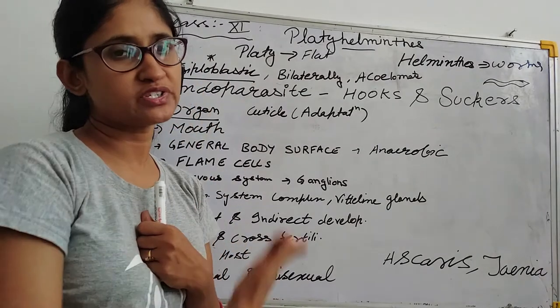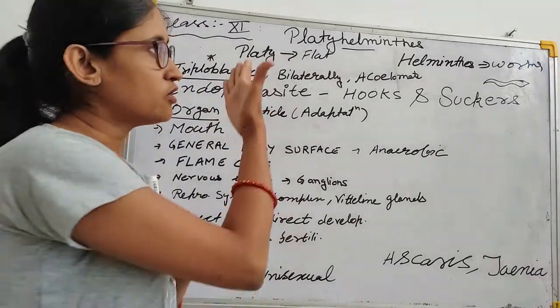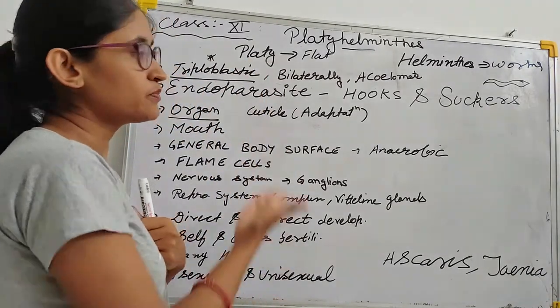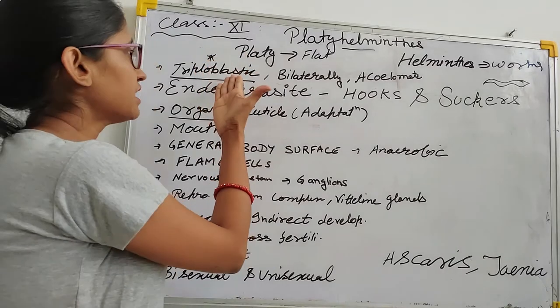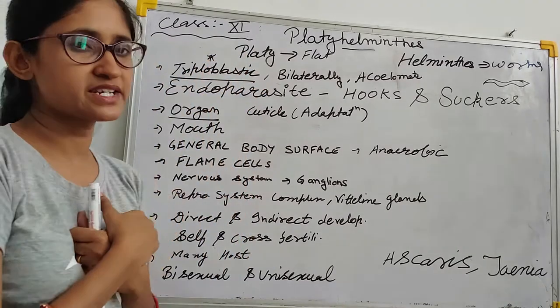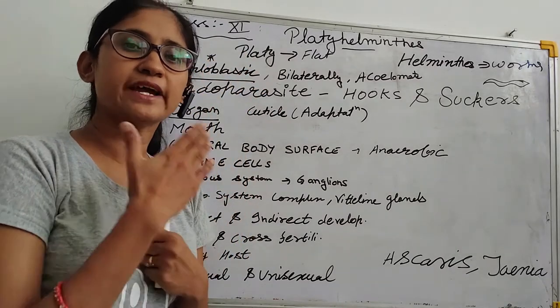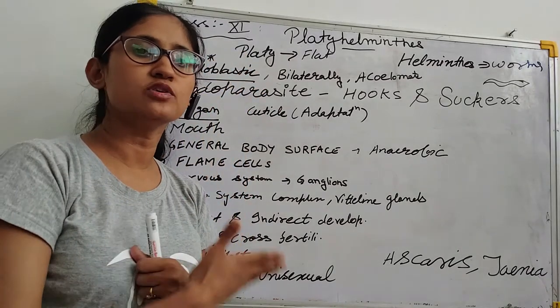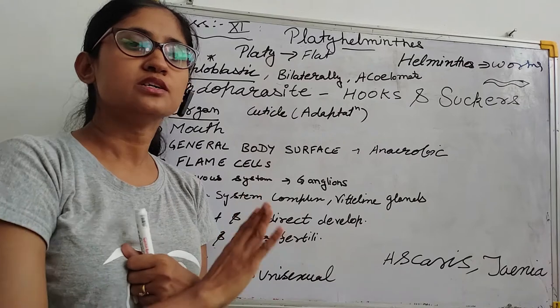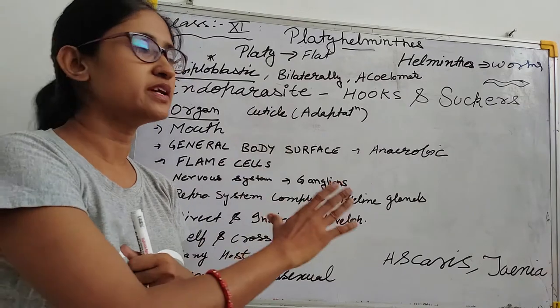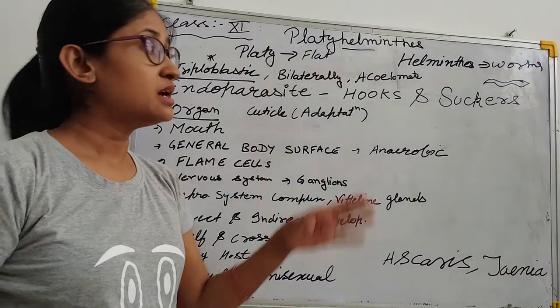What are the special characteristics of platyhelminthes? They are triploblastic — that means ectoderm, endoderm, and mesoderm: three germ layers are developed here.